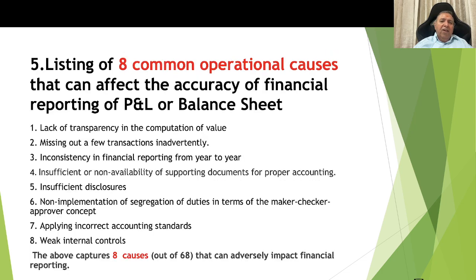Now listing the 8 common operational causes that can affect the accuracy of financial reporting of the P&L or balance sheet, which were also discussed in my previous presentation: lack of transparency in the computation of value; missing out a few transactions inadvertently; inconsistency in financial reporting from year to year; insufficient or non-availability of supporting documents; insufficient disclosures; non-implementation of segregation of duties in terms of maker-checker approval concept; applying incorrect accounting standards; and weak controls. These are the 8 causes out of 68 that can adversely affect financial reporting.